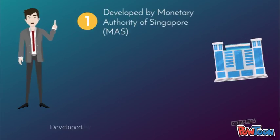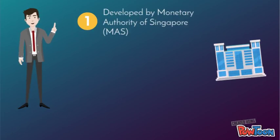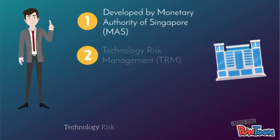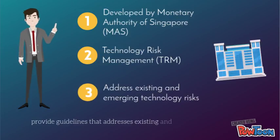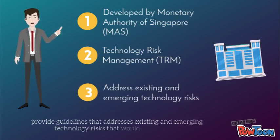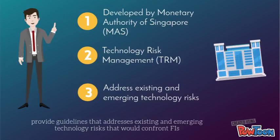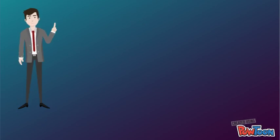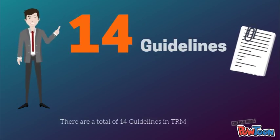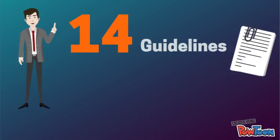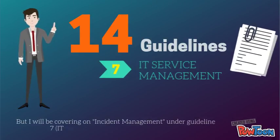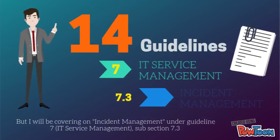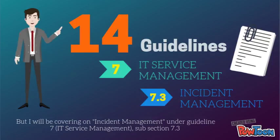Developed by the Monetary Authority of Singapore, Technology Risk Management, or TRM, provides guidelines that address existing and emerging technology risks that will confront FIs. There are a total of 14 guidelines in TRM, but I'll be covering incident management under guideline 7, subsection 7.3.